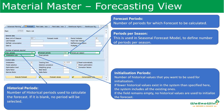Number of periods for initialization — this is used for the historical values that we want to be used for the forecast initialization. If the initialization period field is blank, no historical values are used to initialize the forecast.